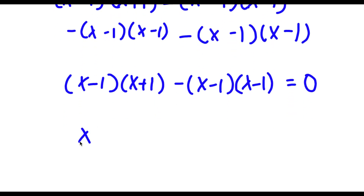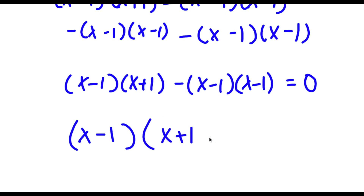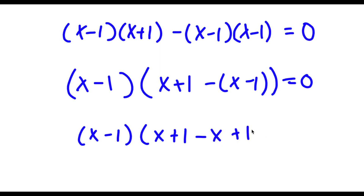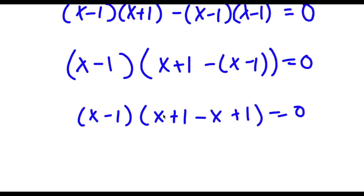Now if I factor out x minus 1, I get x minus 1 times x plus 1 minus x minus 1, which is equal to 0. Now this is equal to x minus 1 times x plus 1 minus x plus 1, which is equal to 0.